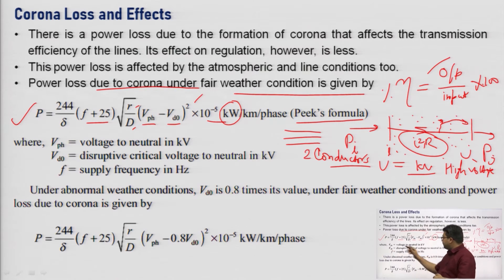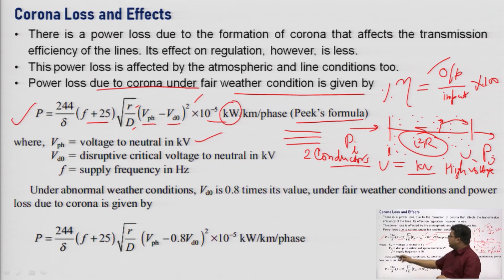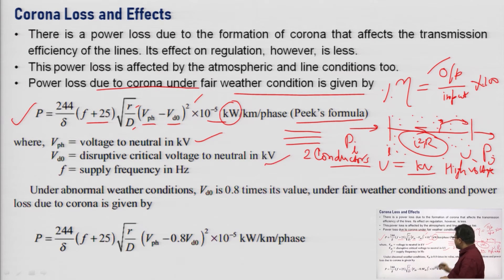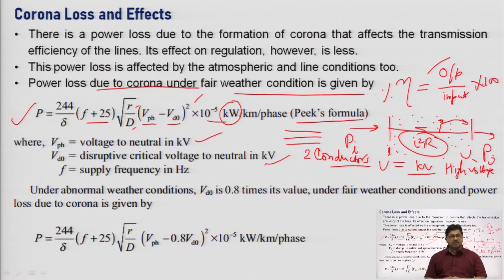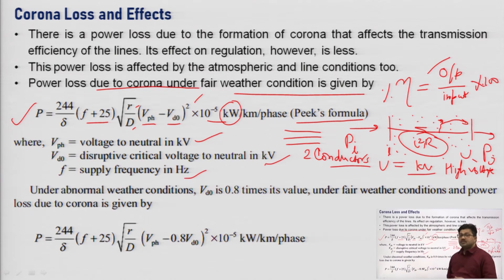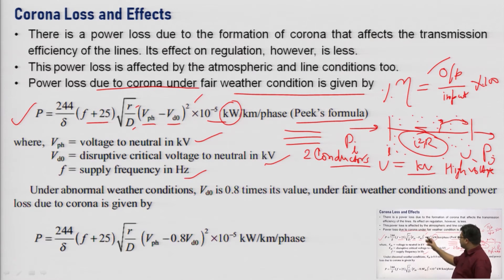Where V_ph is the phase-to-neutral voltage in kilovolts, V_d0 is the critical disruptive voltage to neutral in kilovolts, and f is the supply frequency.